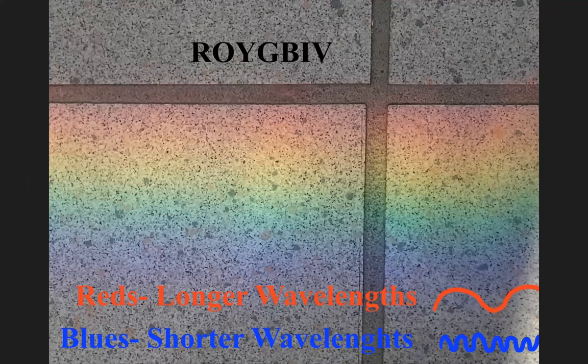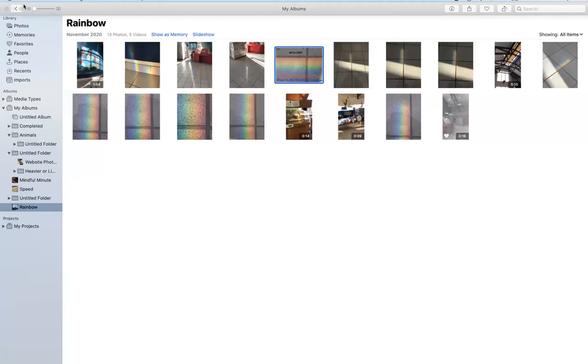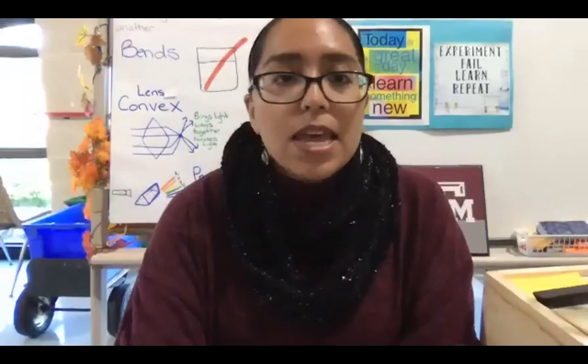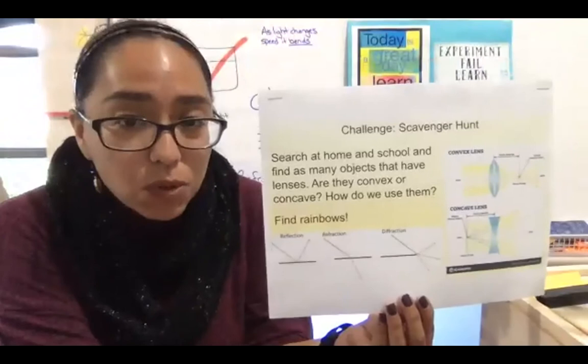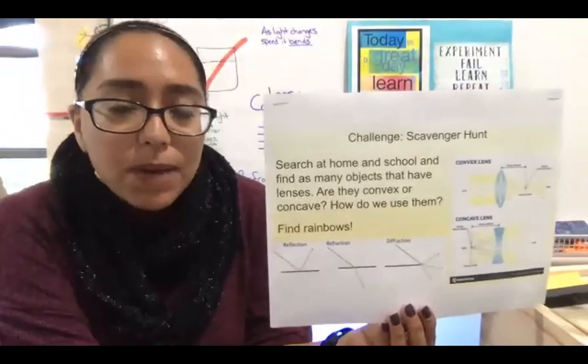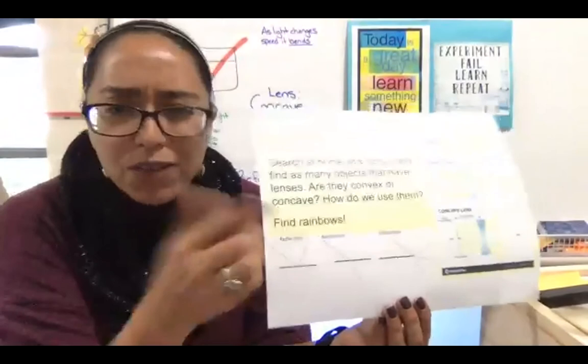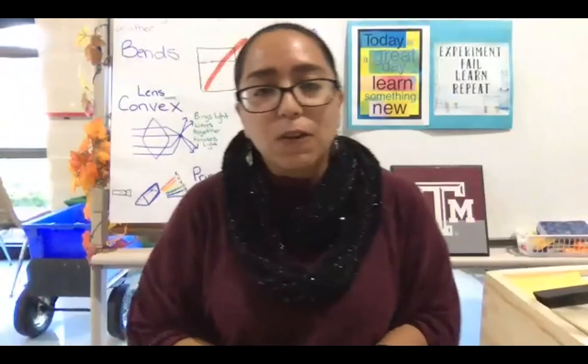The last thing I have for you is a quick challenge — a scavenger hunt. See if you can search at home and school to find as many objects as possible that have lenses. Think about whether those lenses are convex or concave and how they help us. Also see if you can find some rainbows around the school or your house. Those are a fun little scavenger hunt for you. We're going to go ahead and pass it back to Mr. Broughton to answer any questions.